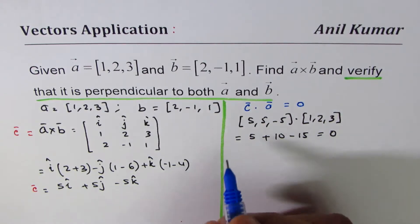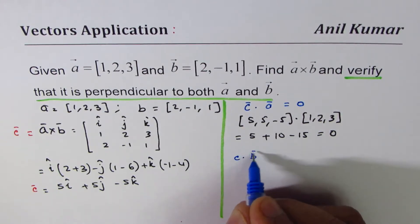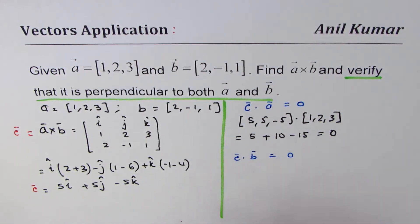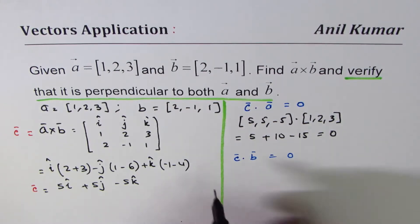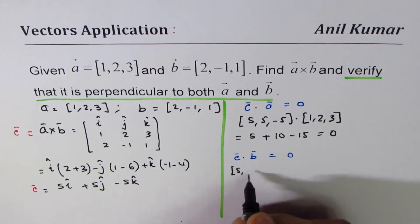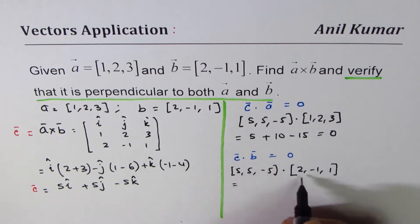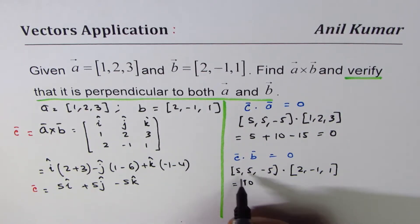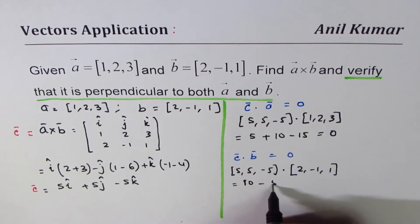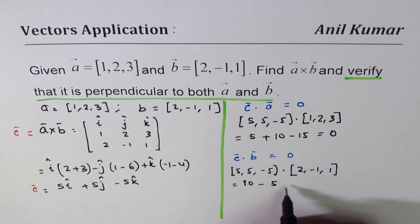Similarly, let's find c·b. Is it equal to 0 or not? We have [5,5,-5] dot [2,-1,1]: 5 times 2 is 10, 5 times -1 is -5, -5 times 1 is -5. This is also 0. Since their dot product is 0, they are perpendicular.